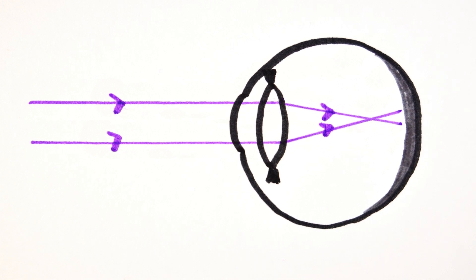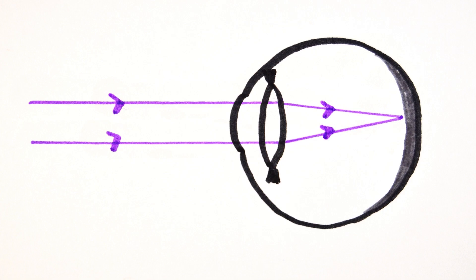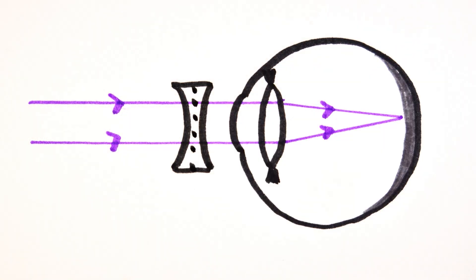Another reason is due to the lens being too powerful, again resulting in the light converging to a point in front of the retina. The way to correct short-sightedness is to place a diverging lens in front of the eye, in the form of glasses of course. This spreads the light out slightly before it reaches the eye so the light gets focused properly inside it.